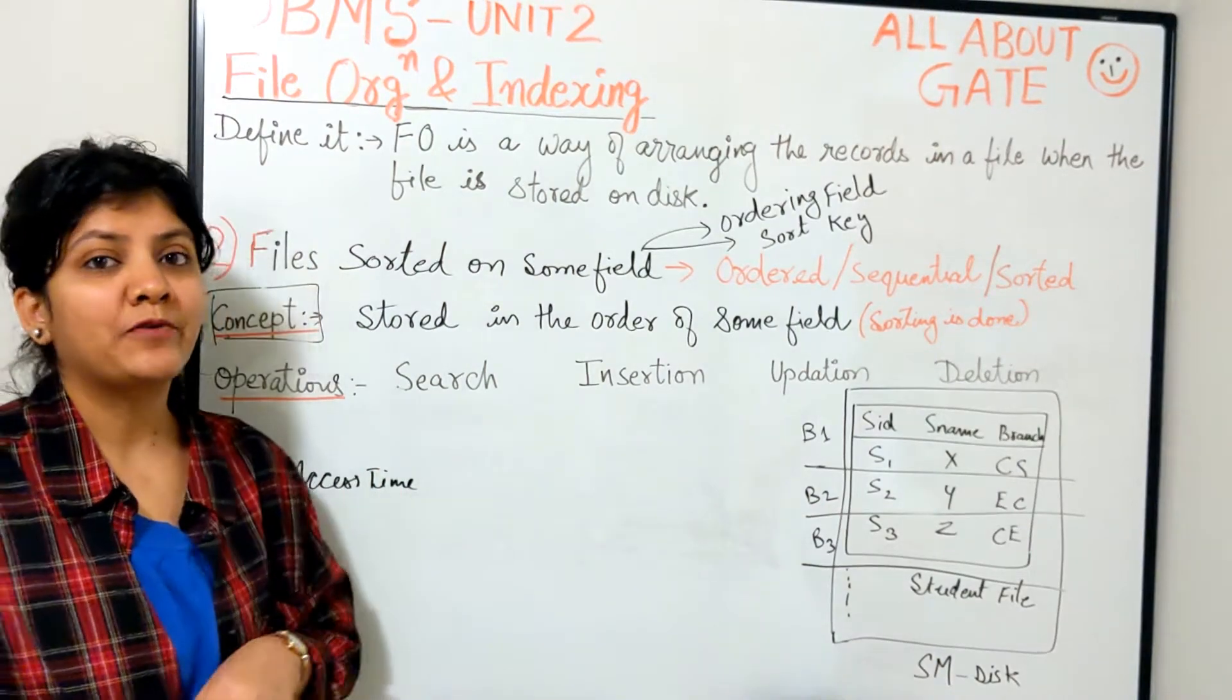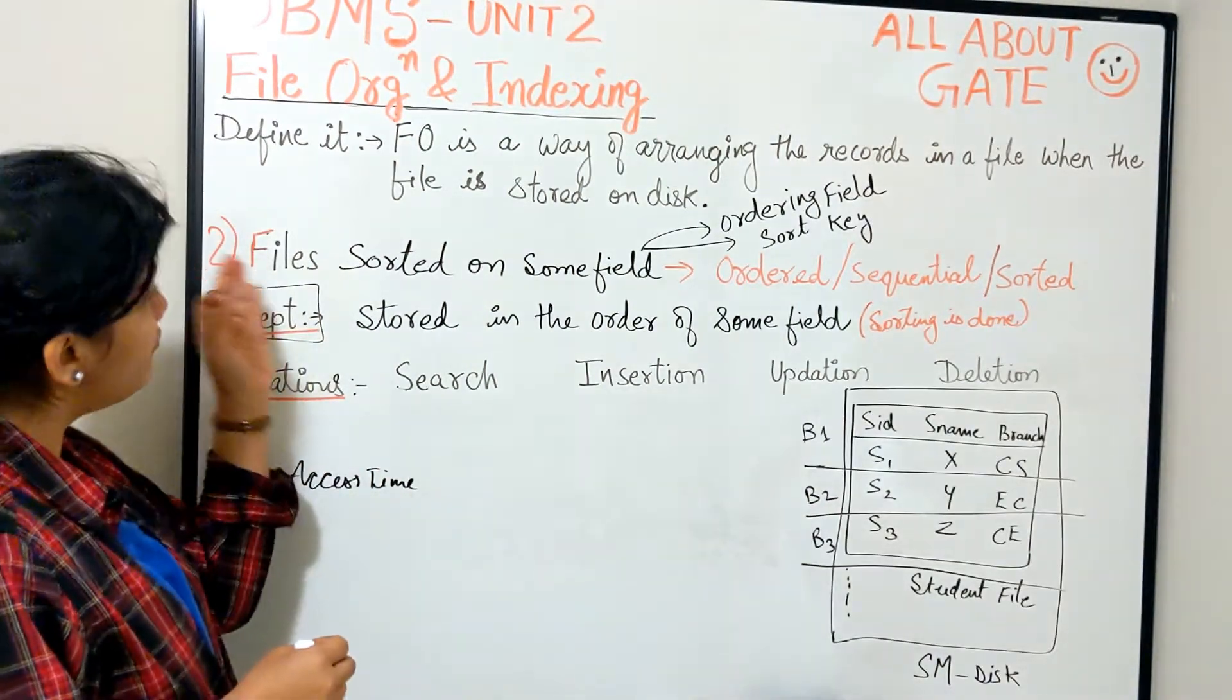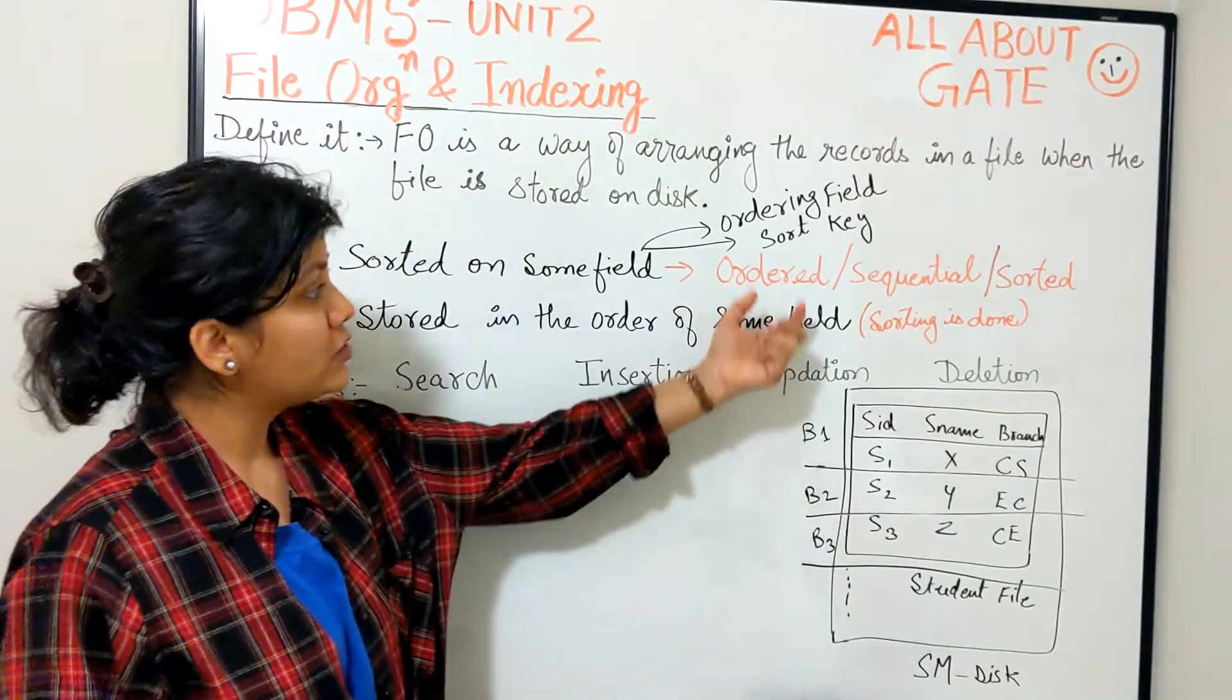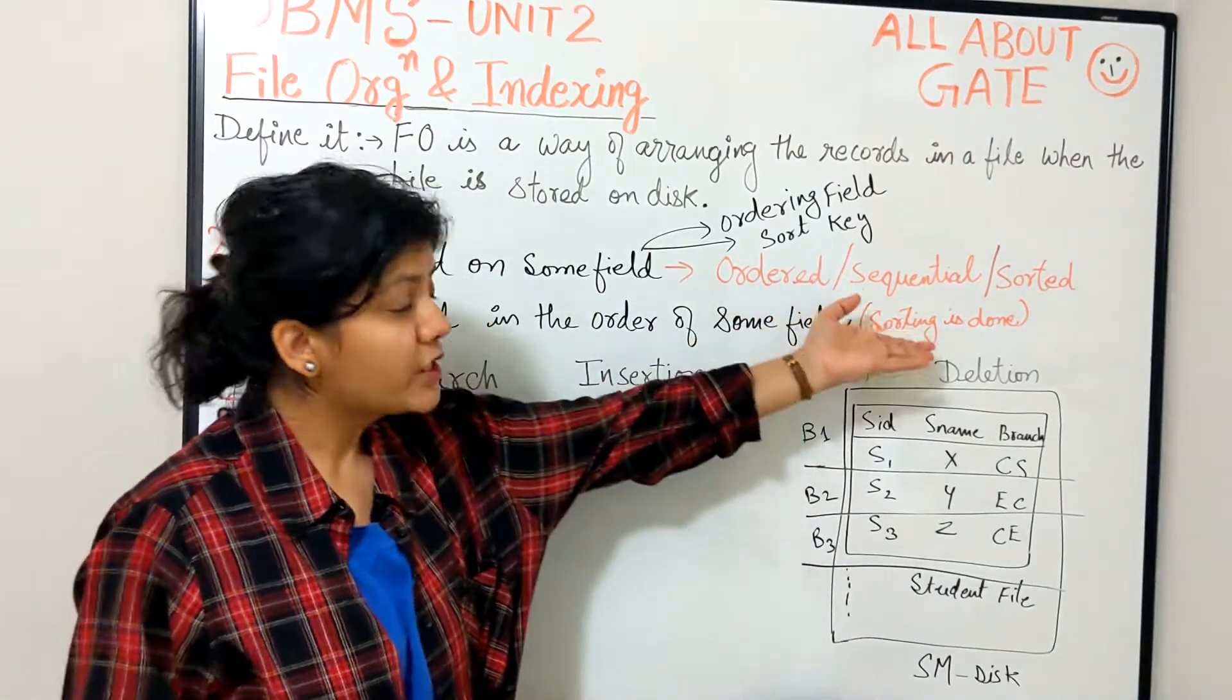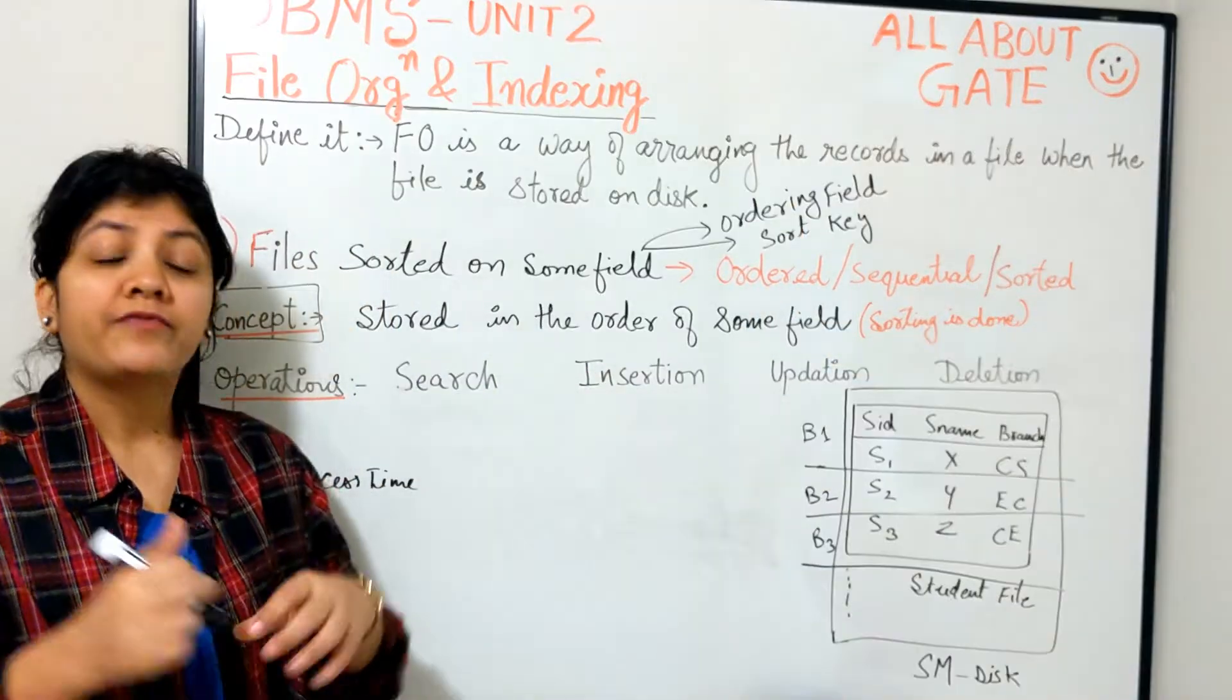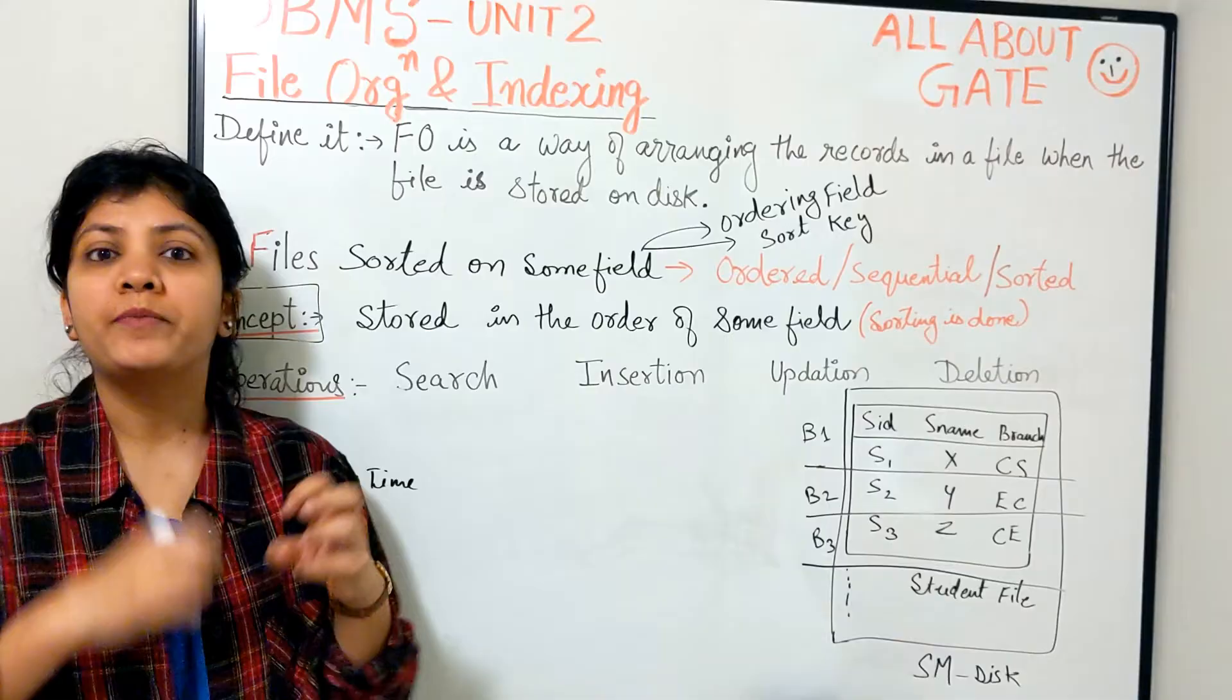Let's understand the second type of file organization, which is files sorted on some field. This is also known as ordered or sequential or sorted file organization. In the first one, we were not having any particular order of storing the records.